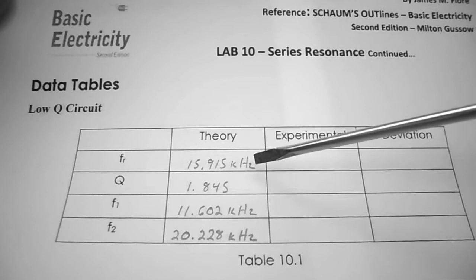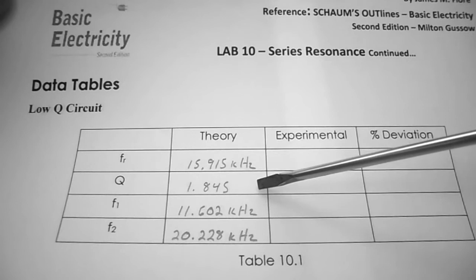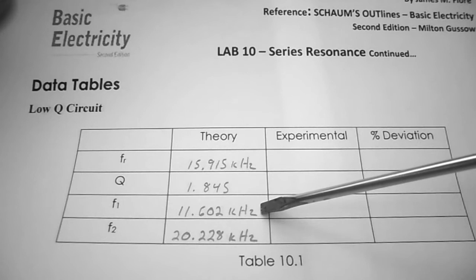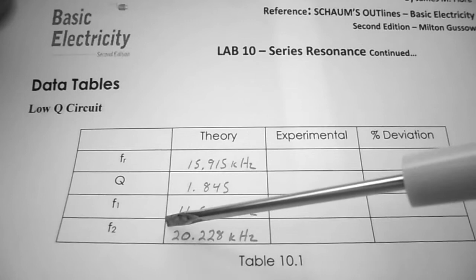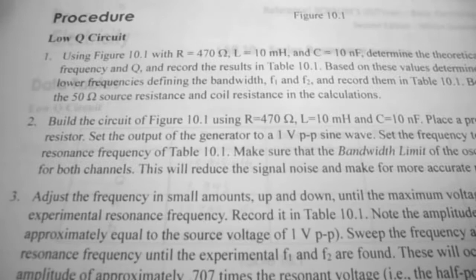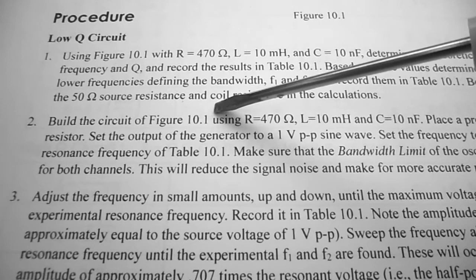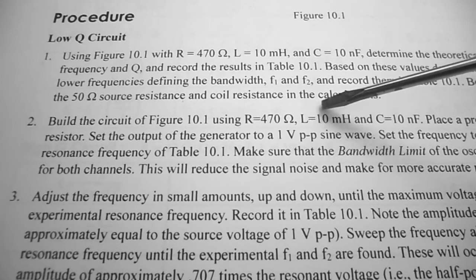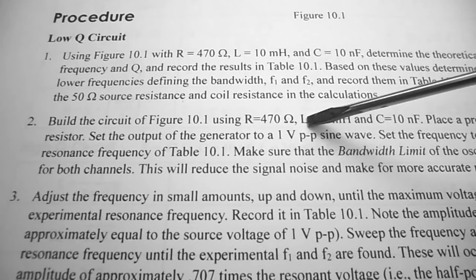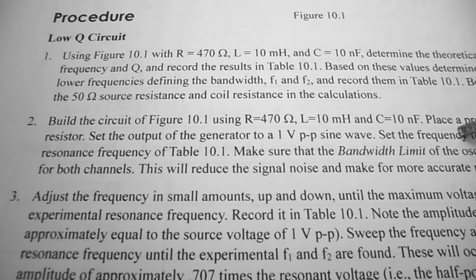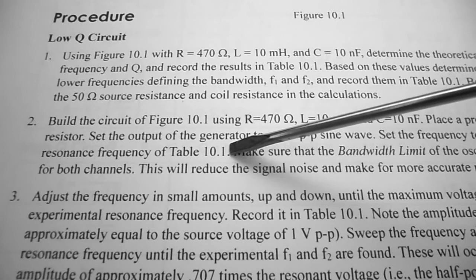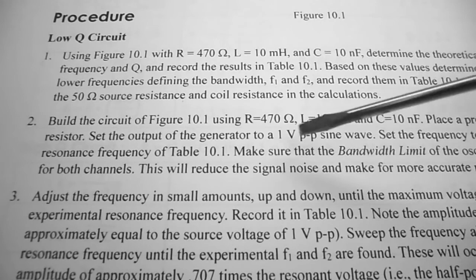In Table 10.1, I've filled in resonant frequency as 15.915 kHz, Q as 1.845, F1 as 11.602 kHz, and F2 as 20.228 kHz. Under procedure step 2, we build the circuit using R = 470 ohms, L = 10 mH, and C = 10 nF. We place a probe across the resistor, set the output of the generator to 1 volt peak-to-peak sine wave, and set the frequency to the theoretical resonant frequency of around 16 kHz.